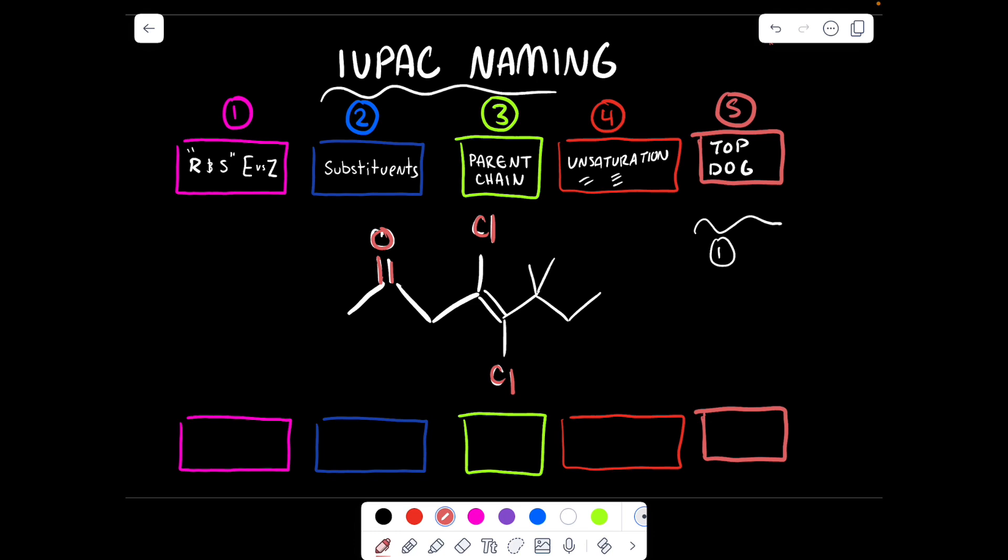Now every single functional group will have both a prefix and a suffix. The suffix is what you use if it is the top dog functional group. Here our top dog is a ketone, and the suffix for a ketone, which you unfortunately have to memorize, is 'one.' So I'm going to put 'one' in the last box.